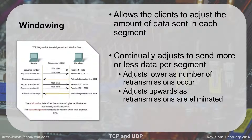We adjust upward and lower. If we have to retransmit a lot, we go to smaller and smaller packages. If we're getting it all, we keep going upward until we have errors. We keep adjusting to push as much as we can, as quickly as we can, without having too many errors.